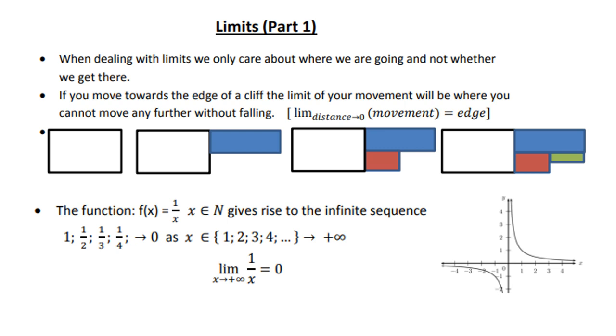Take note: where we are going and not whether we get there. If you move towards the edge of a cliff, for instance, the limit of your movement towards the edge cannot be further than the edge. Because if you do that, you are going to fall and die. So therefore the limit or the cutting off point will be the edge, as your distance approaches zero, as you move closer and closer to the edge.